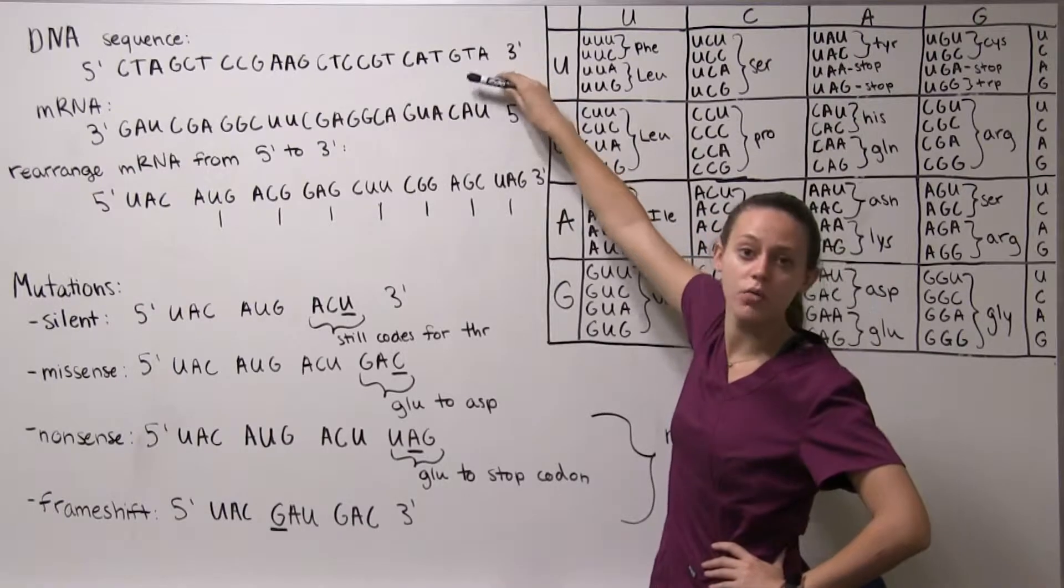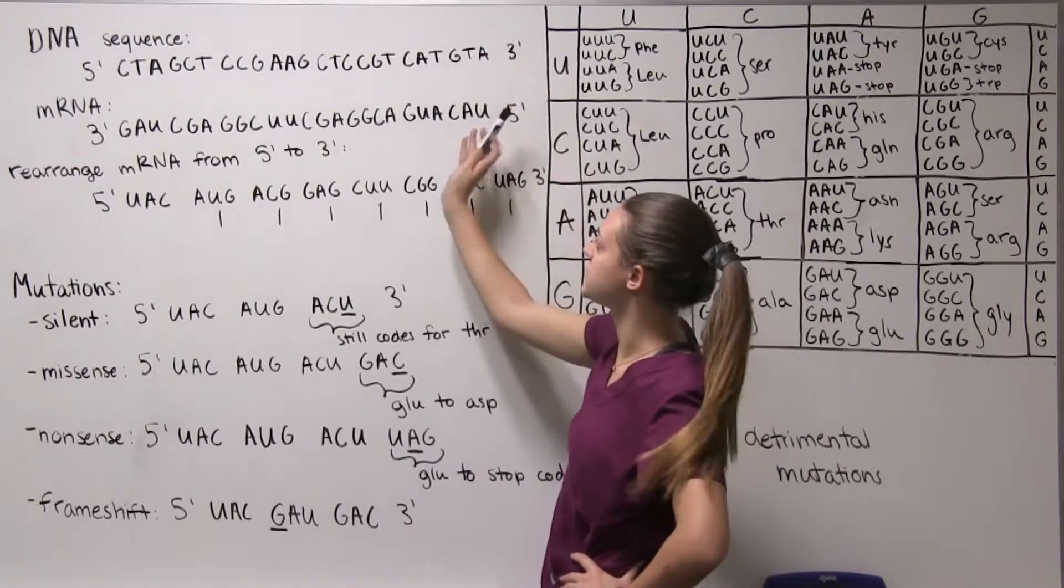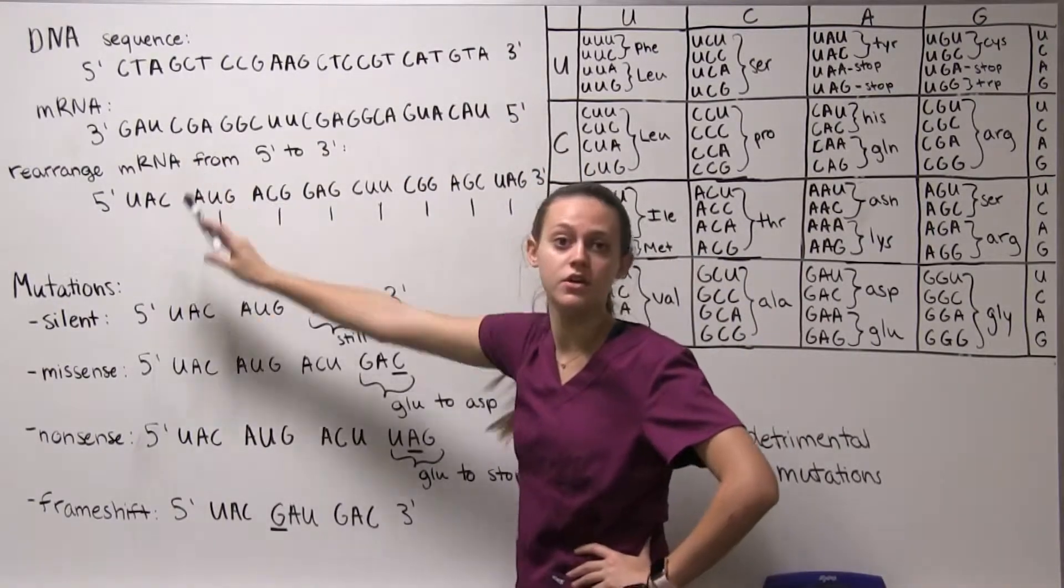So for T we're gonna base pair with A, for G we are going to base pair with C and so on throughout the rest of the sequence.